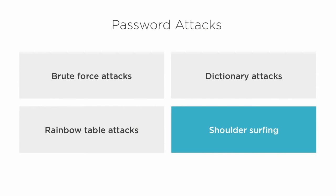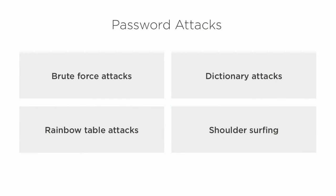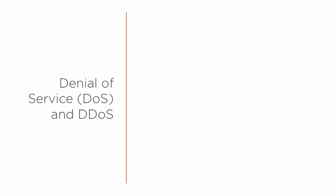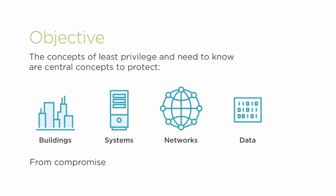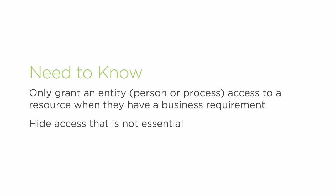Access controls lie at the very heart of an information security program. After all, in the end, information security is all about access control — who can get on our systems, networks and into our buildings, and what can they do when they gain access? We need to build resilient and robust access control systems that will withstand attacks and prevent compromise, whether those attacks come from internal or external sources.